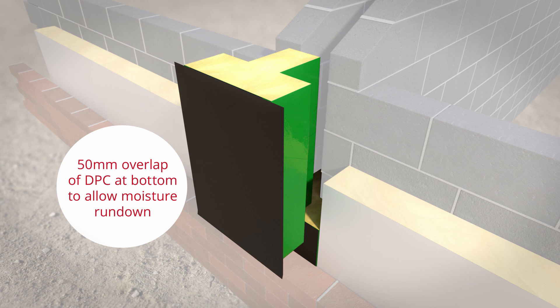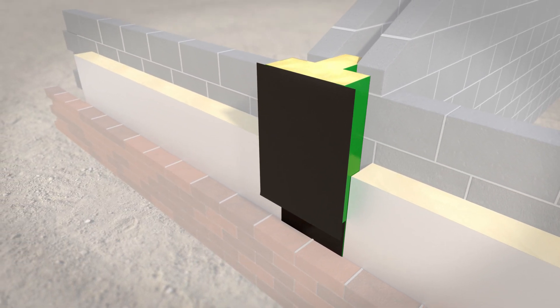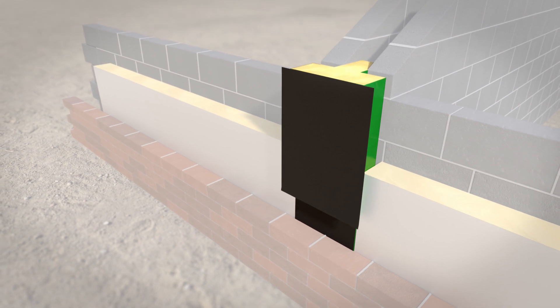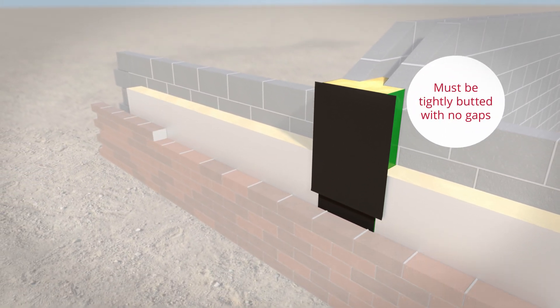It is installed as the brickwork is advancing, with the stalk of the T sitting in compression within the party wall cavity. The external brickwork then advances against the barrier, ensuring a tight fit.